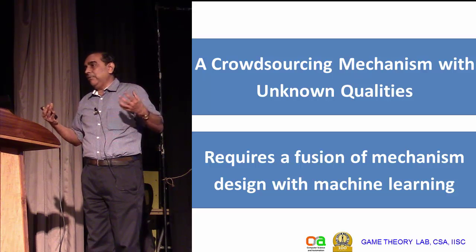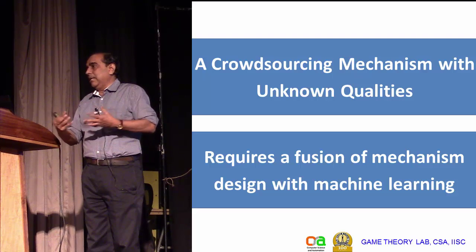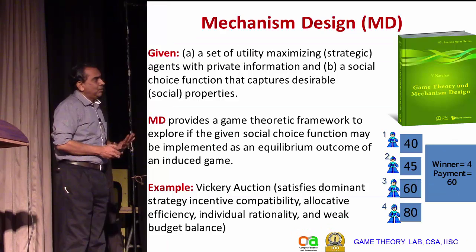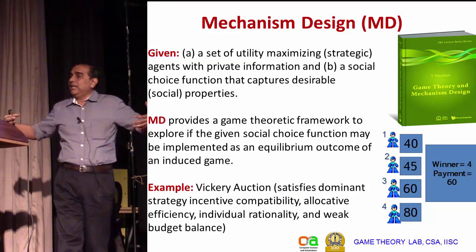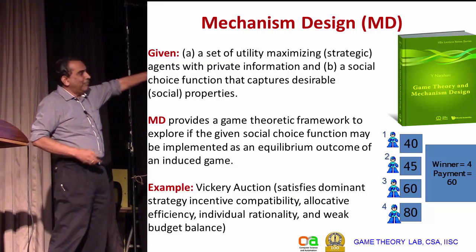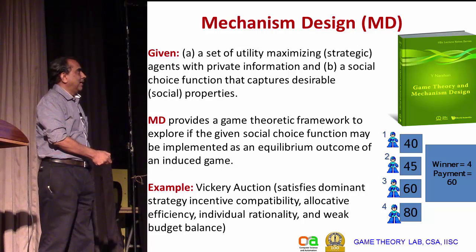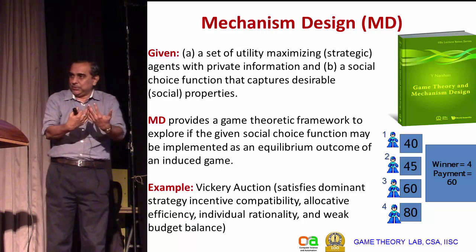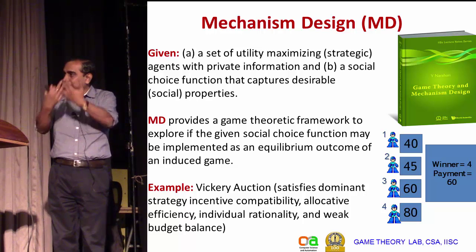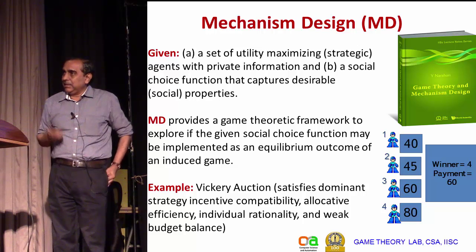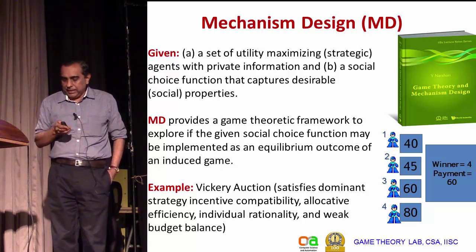You now have both machine learning and mechanism design working together. How do you combine these two tools? We have already seen what mechanism design does: it tries to induce truthful reporting of private information. That is one of the key things that mechanism design does.